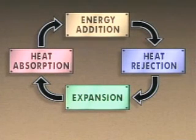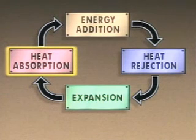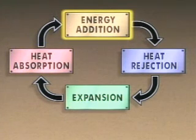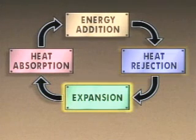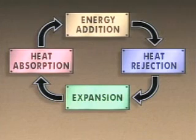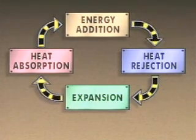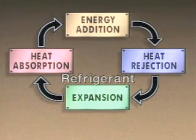A typical vapor compression refrigeration cycle has four basic steps: heat absorption, energy addition, heat rejection, and expansion. Since the steps repeat, the cycle is a closed system and it is designed to operate continuously. The cycle uses a fluid known as a refrigerant to transport heat through the system.